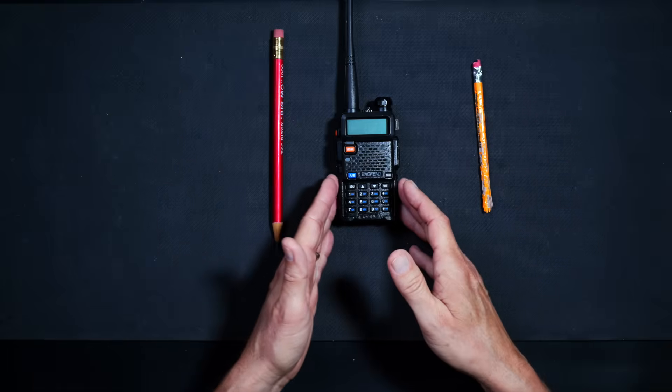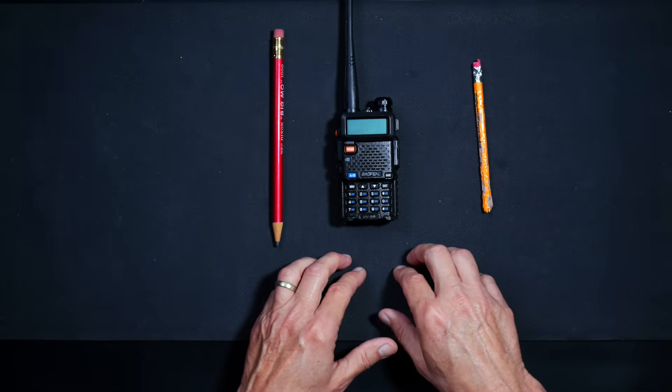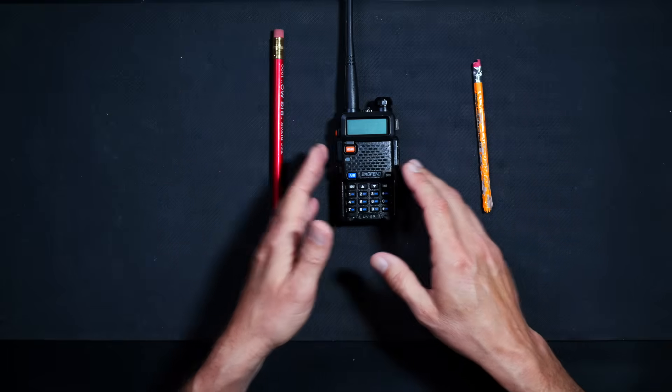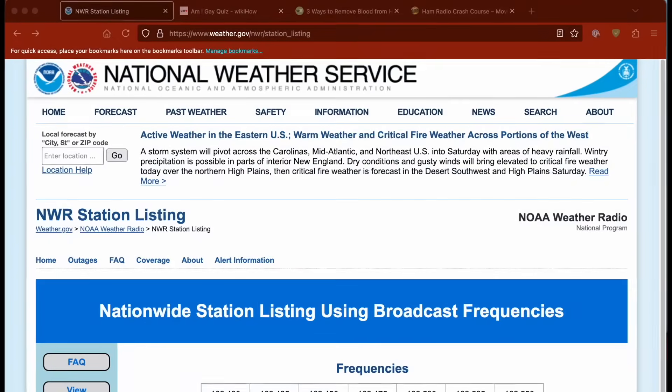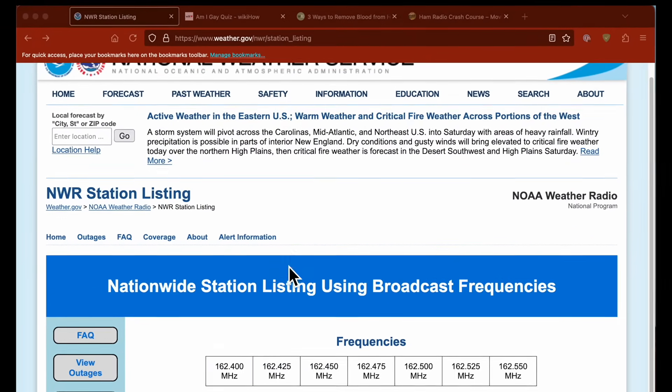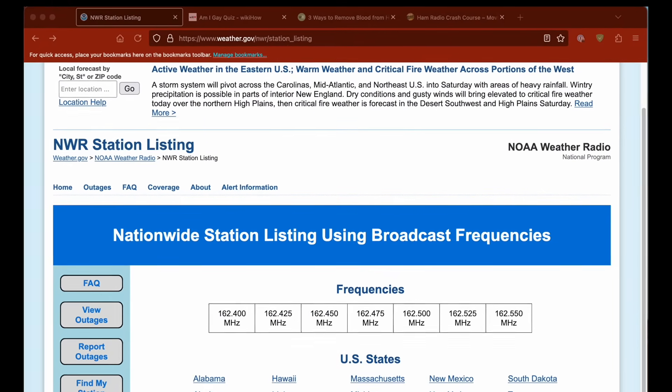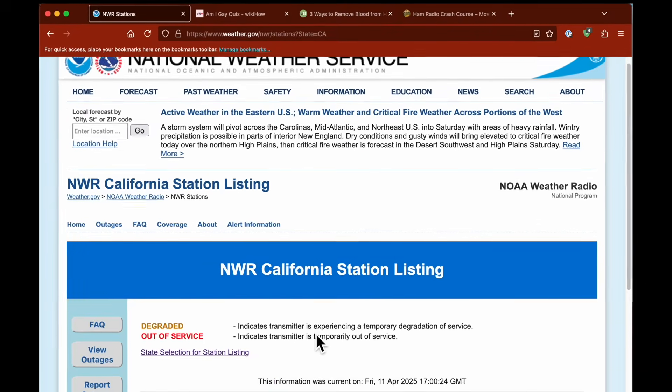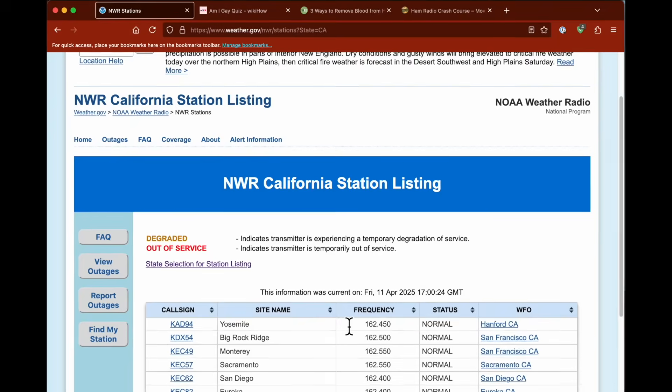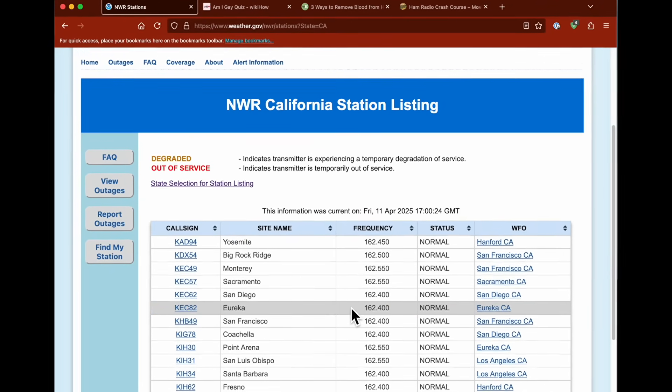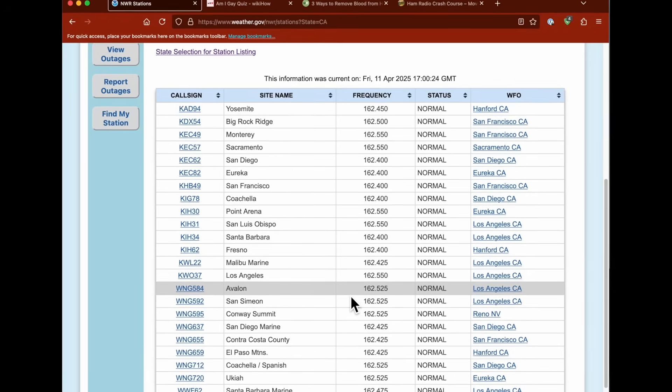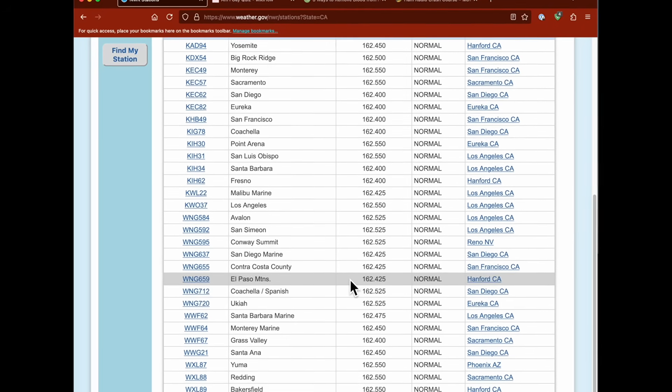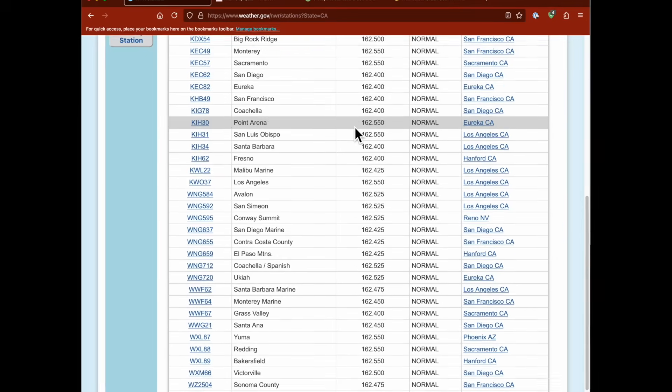To find the correct frequency, open up your browser and go to the weather.gov website. For your clicking convenience, I have put a link directly to that webpage in the information section of this video. Once there, simply find the frequency located nearest to where you are. Once you find the frequency listing for your specific area, just write it down.